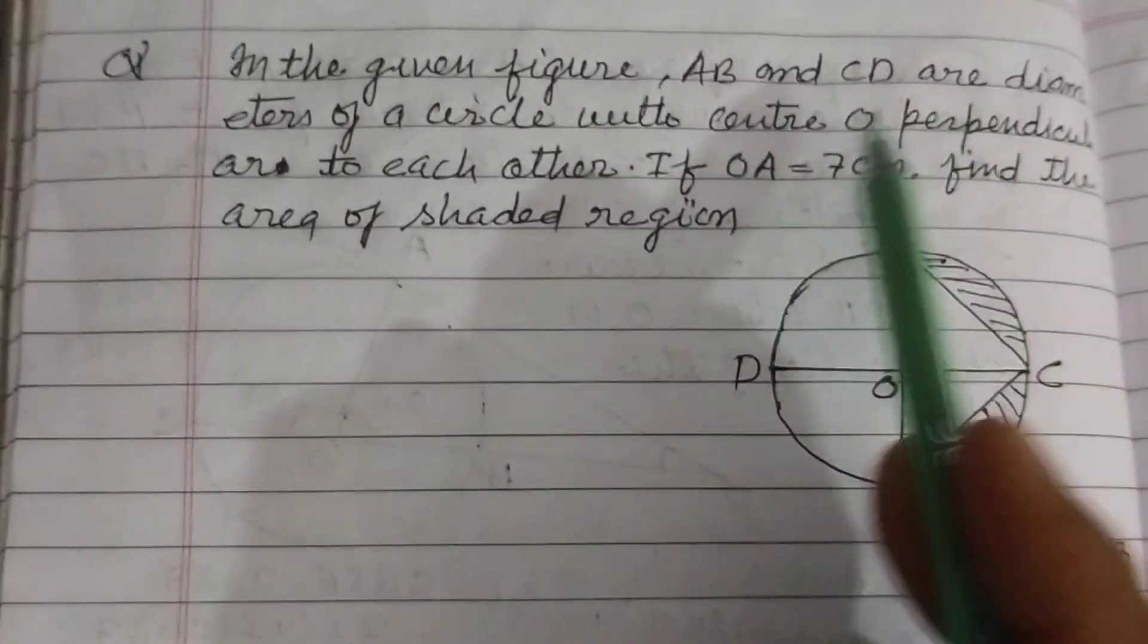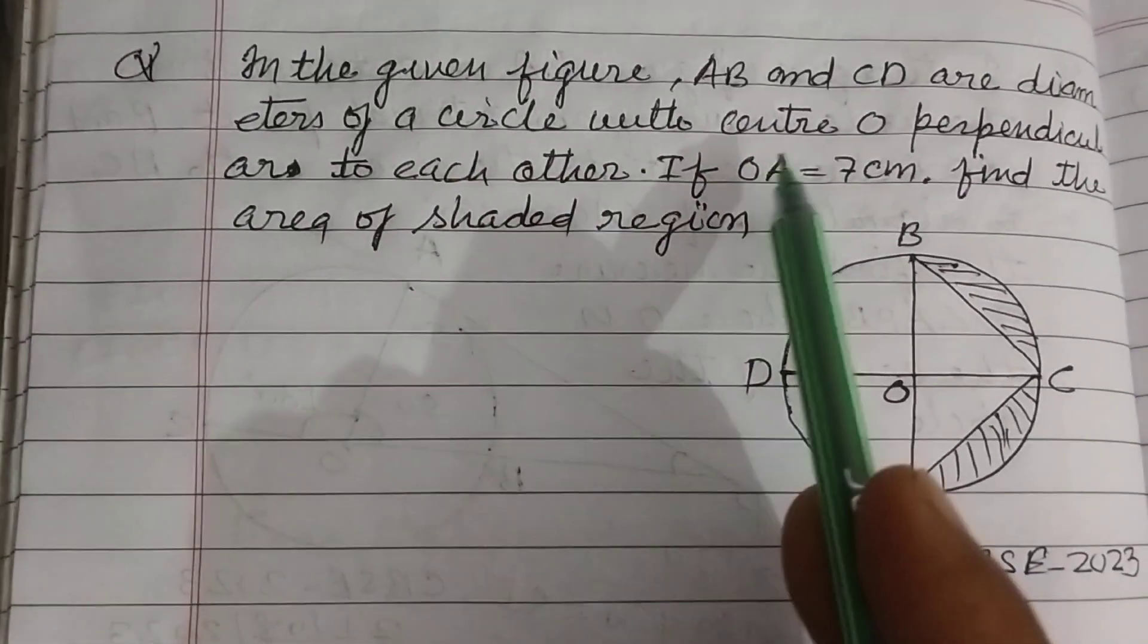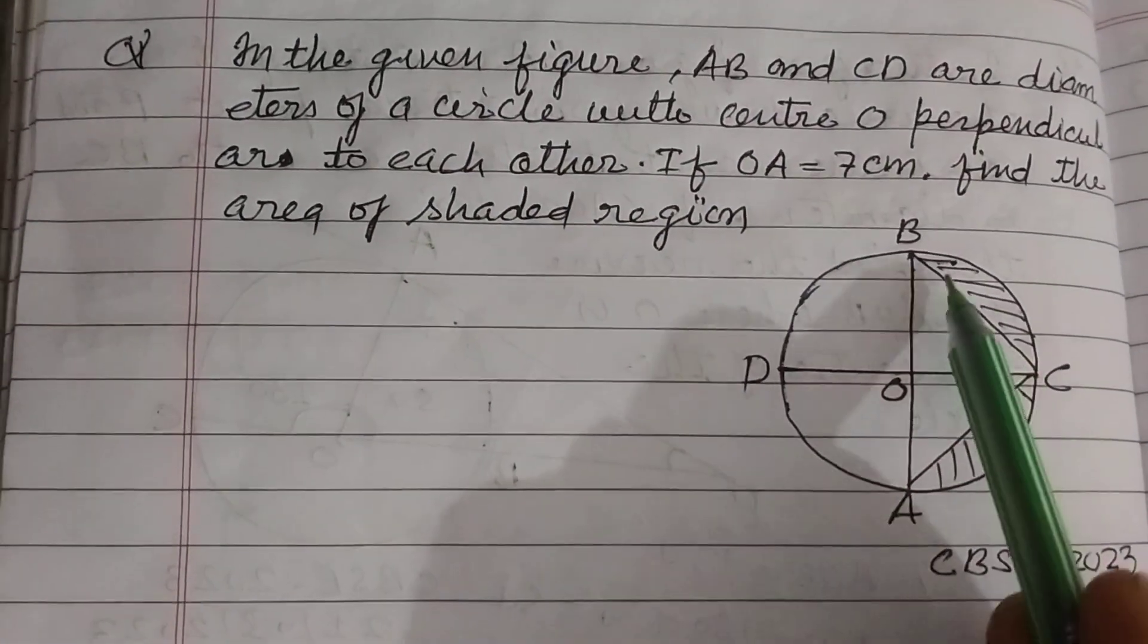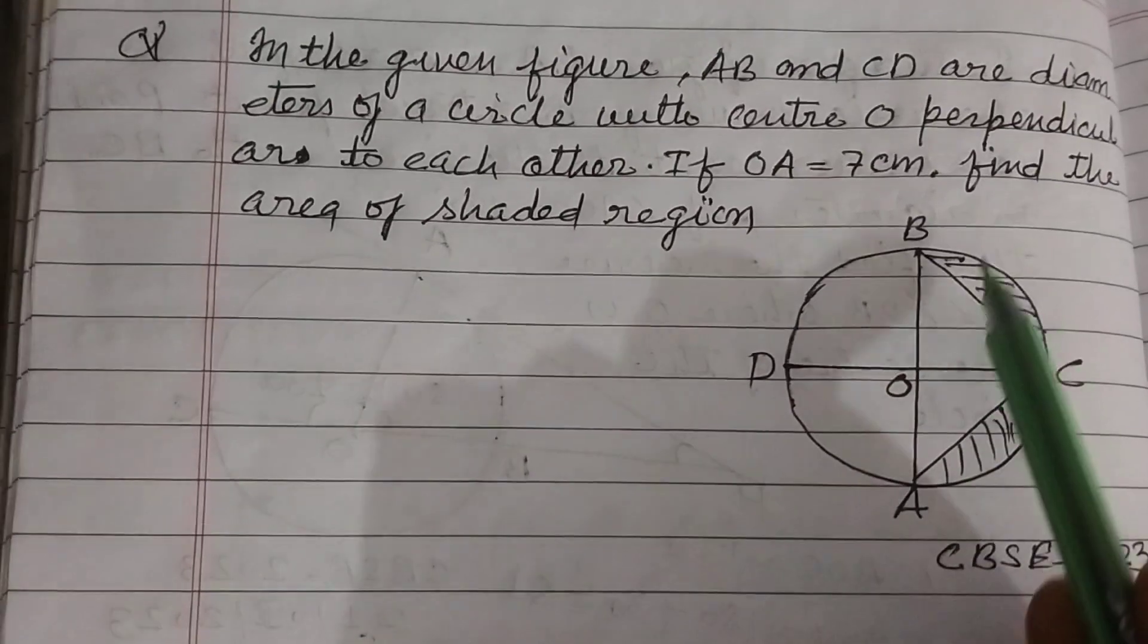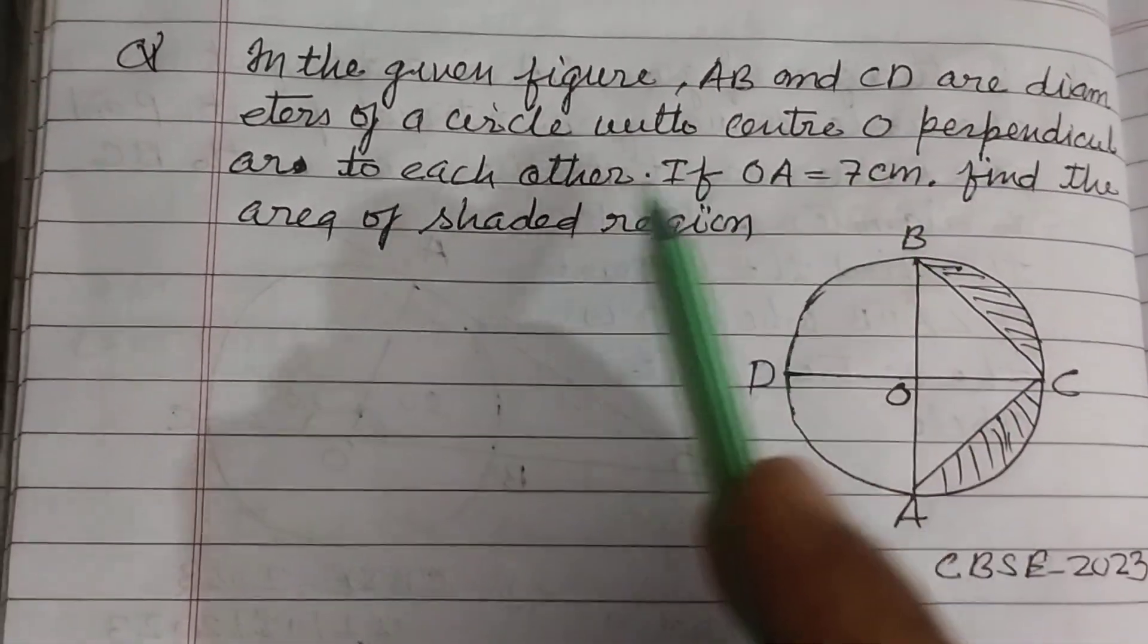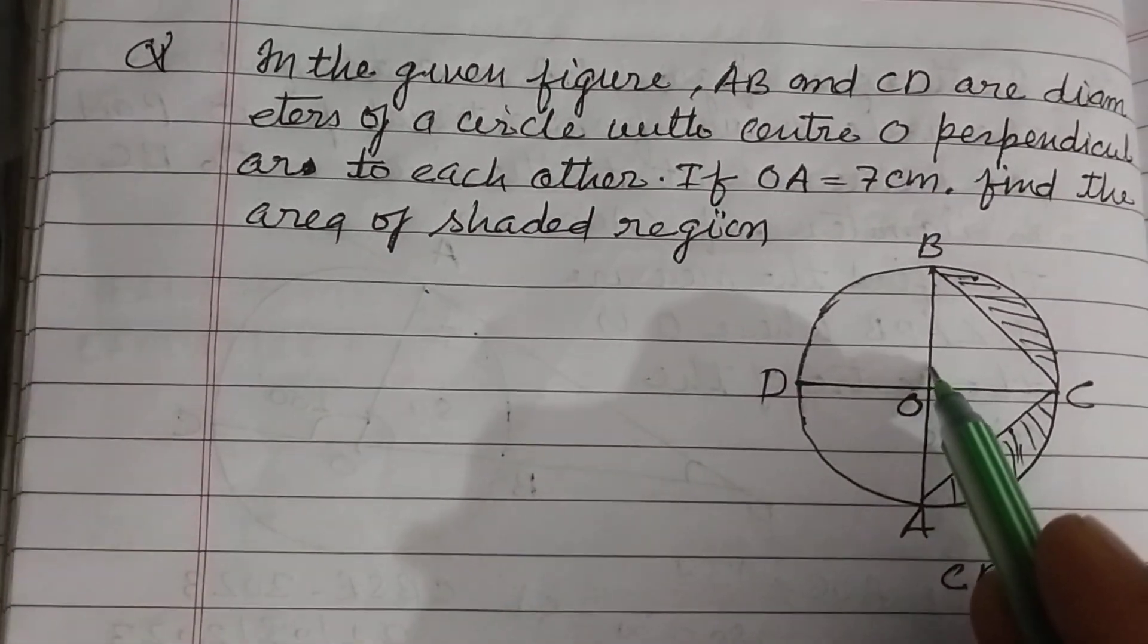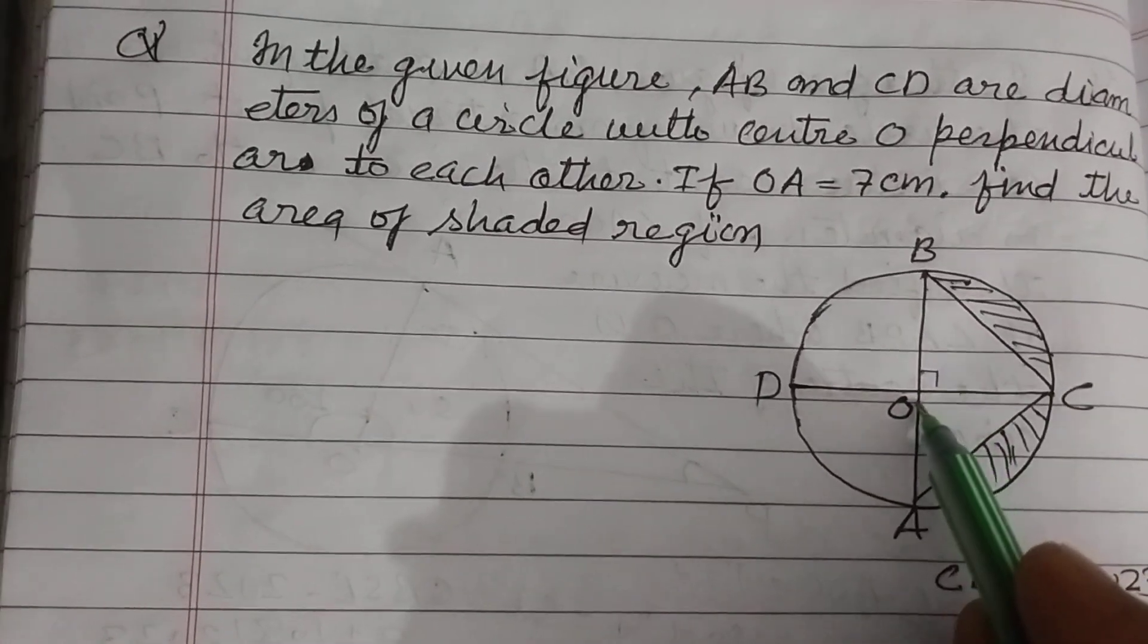In the given figure, AB and CD are diameters of a circle with center O, perpendicular to each other.